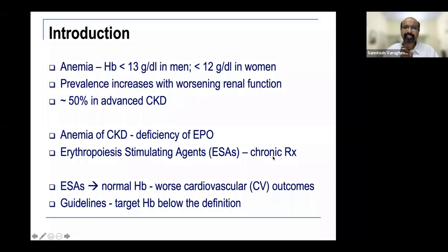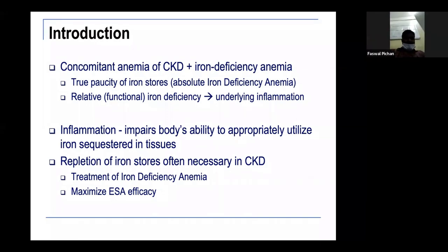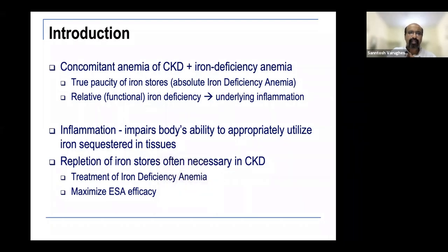The problem is that quite often we have concomitant chronic disease anemia (CKD anemia) plus iron deficiency anemia — either absolute iron deficiency (true paucity of iron stores) or relative/functional iron deficiency due to underlying inflammation. Both lead to iron deficiency anemia. Inflammation impairs the body's ability to utilize iron that's sequestered in tissues, and giving iron causes more sequestration — a double-edged sword. Repletion of iron stores is often necessary in CKD both to treat iron deficiency anemia and to maximize ESA efficacy.